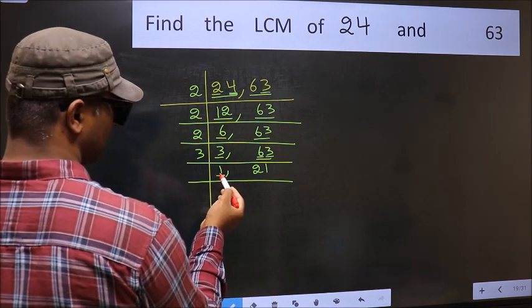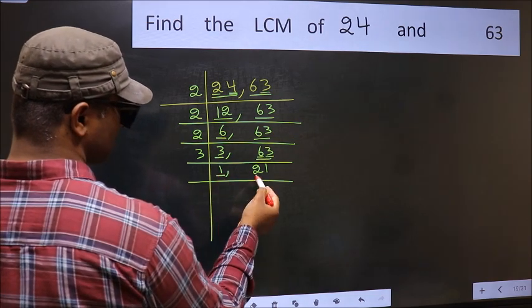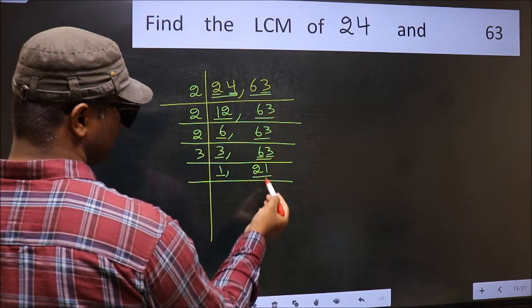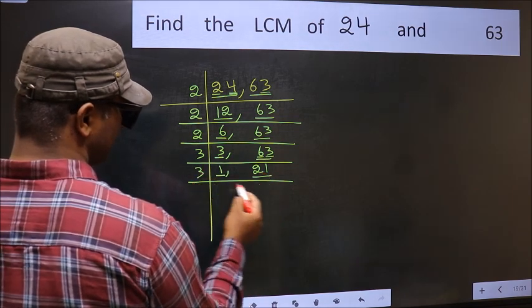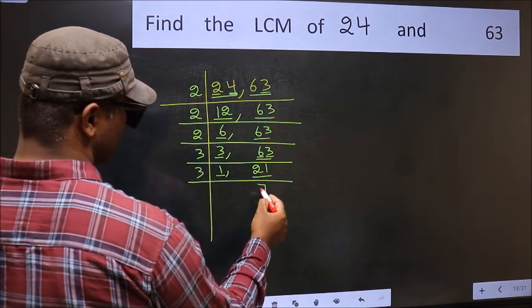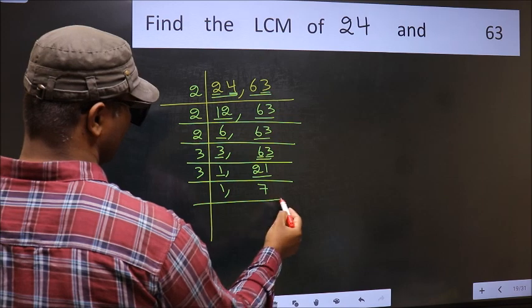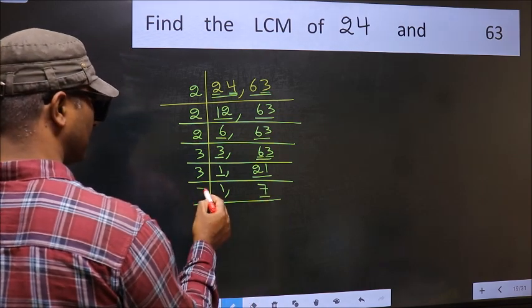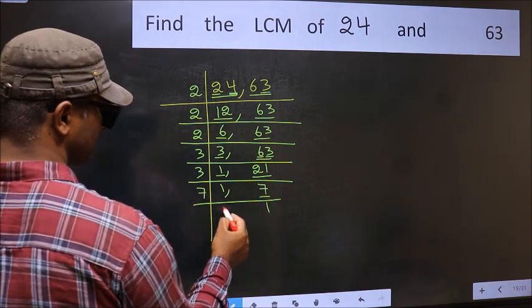Now we got 1 here, so focus on the next number 21. 21 divided by 3 is 7, since 3 times 7 is 21. Now here we have 7. 7 is a prime number, so 7 times 1 is 7.